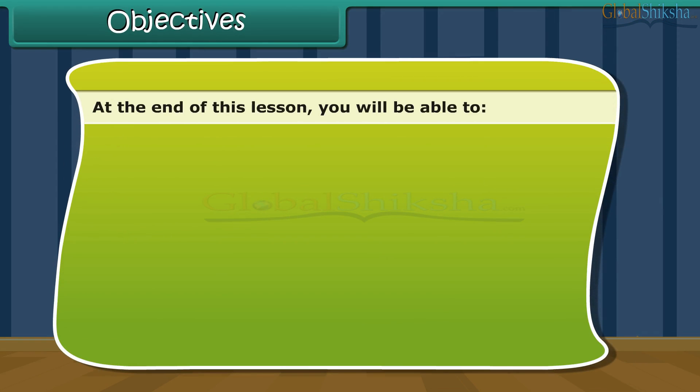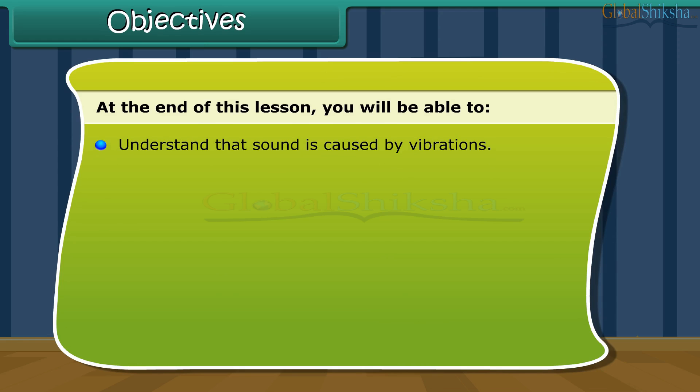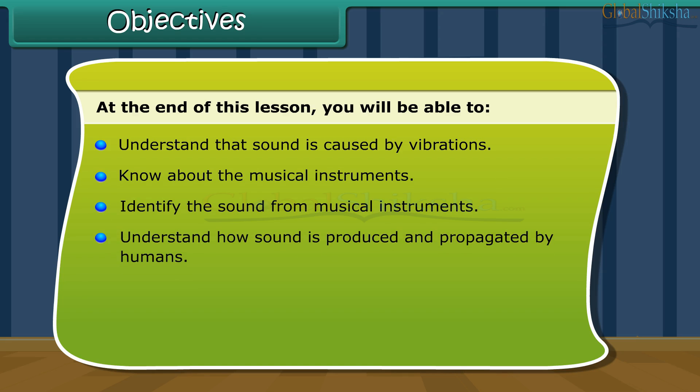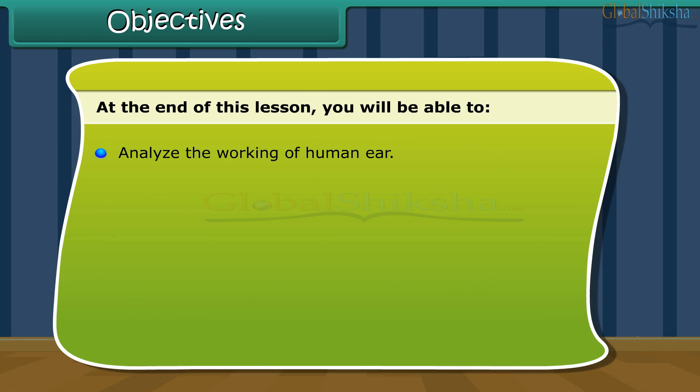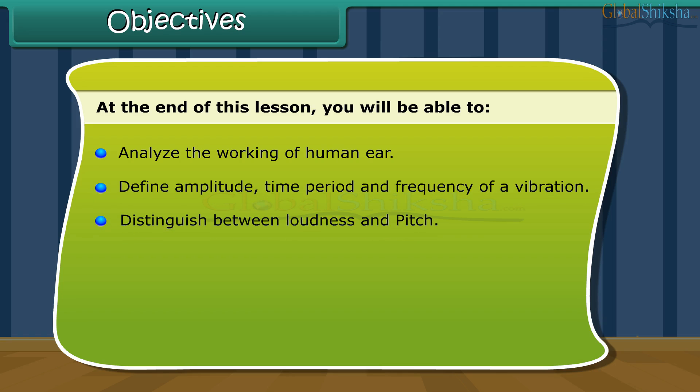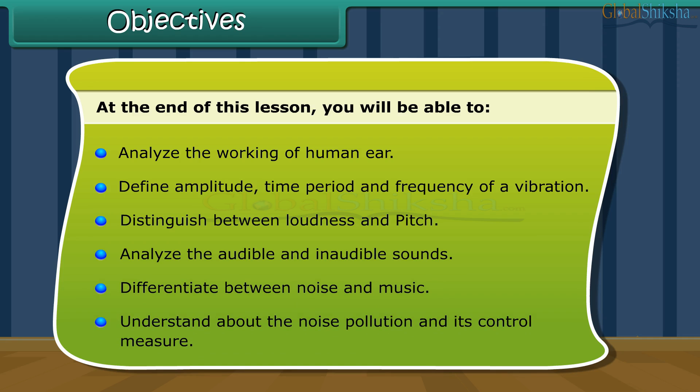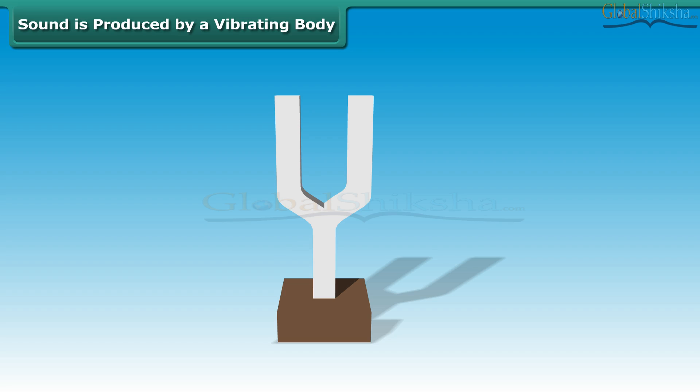Objectives: At the end of this lesson, you'll be able to understand that sound is caused by vibrations, know about the musical instruments, identify the sound from musical instruments, understand how sound is produced and propagated by humans, acquire knowledge where the sound requires a medium for propagation, understand the propagation of sound in liquids and solids, analyze the working of human ear, define amplitude, time period, and frequency of a vibration, distinguish between loudness and pitch, analyze the audible and inaudible sounds, differentiate between noise and music, understand about the noise pollution and its control measure.